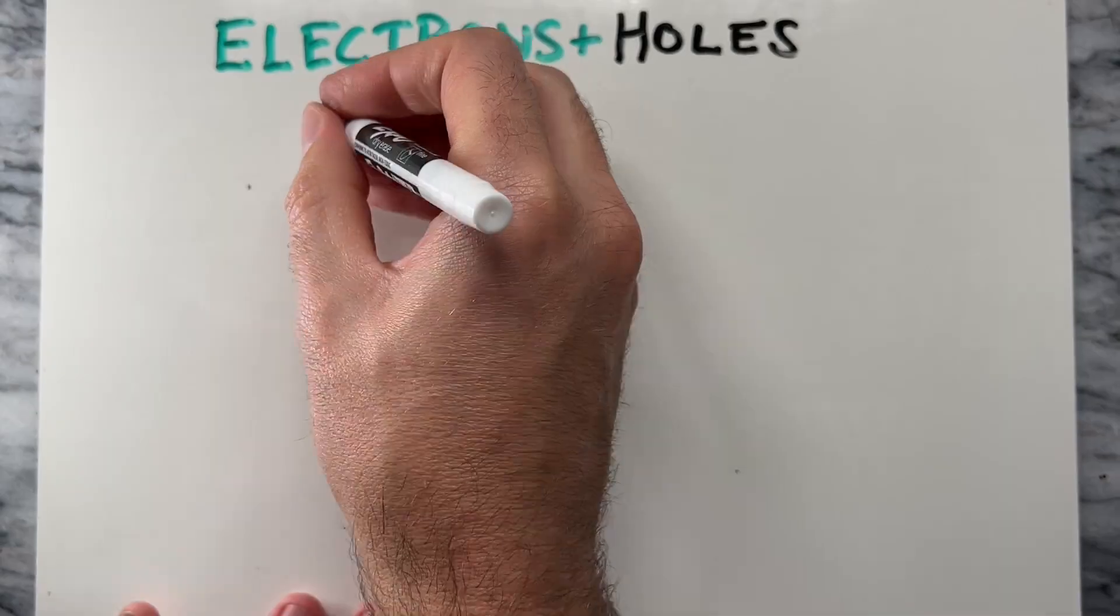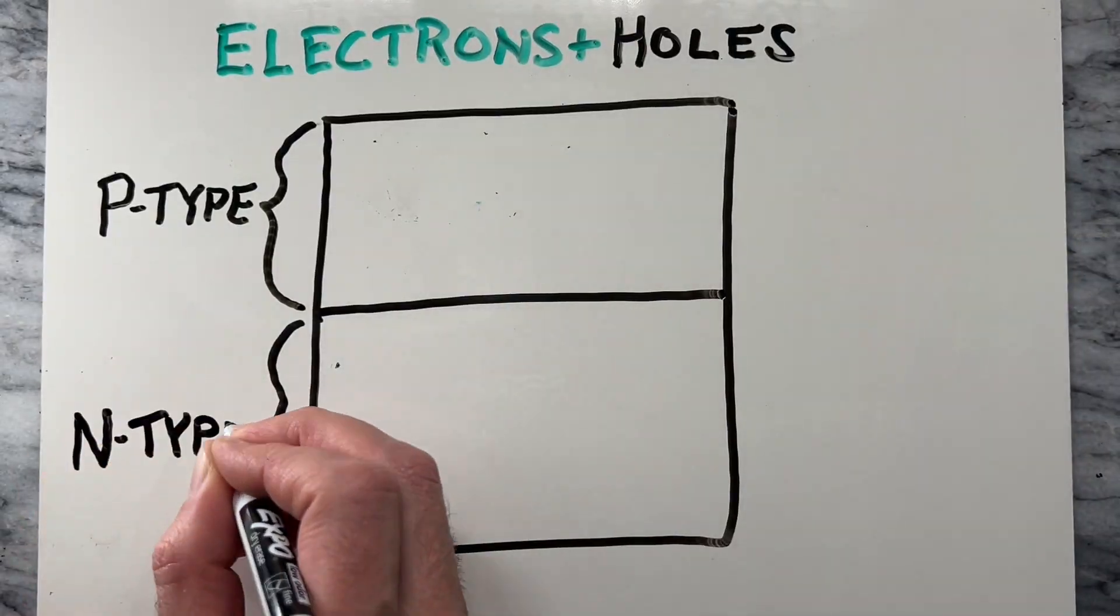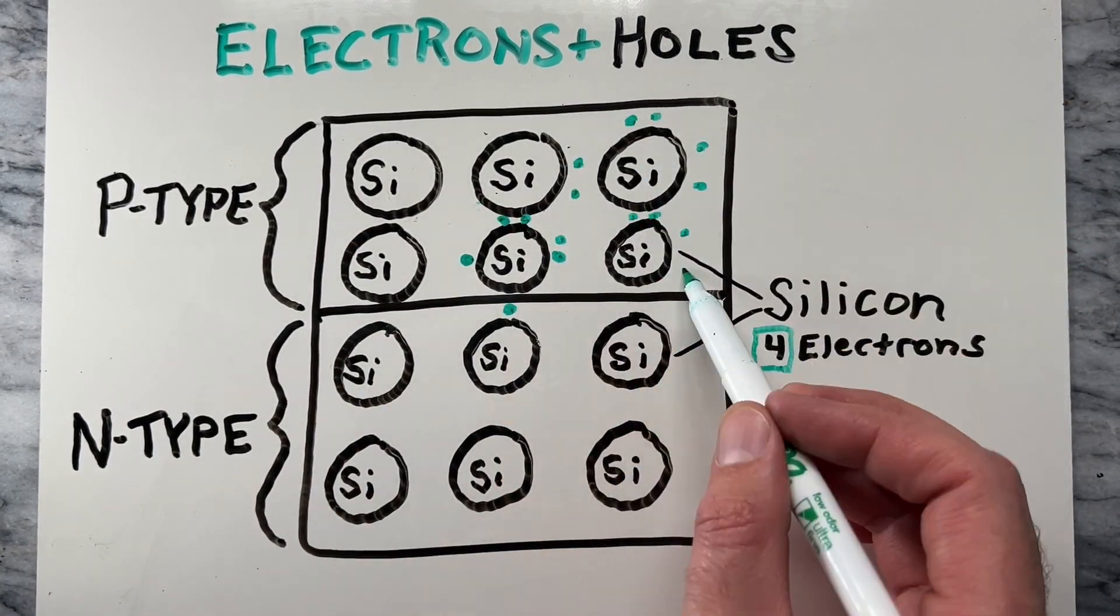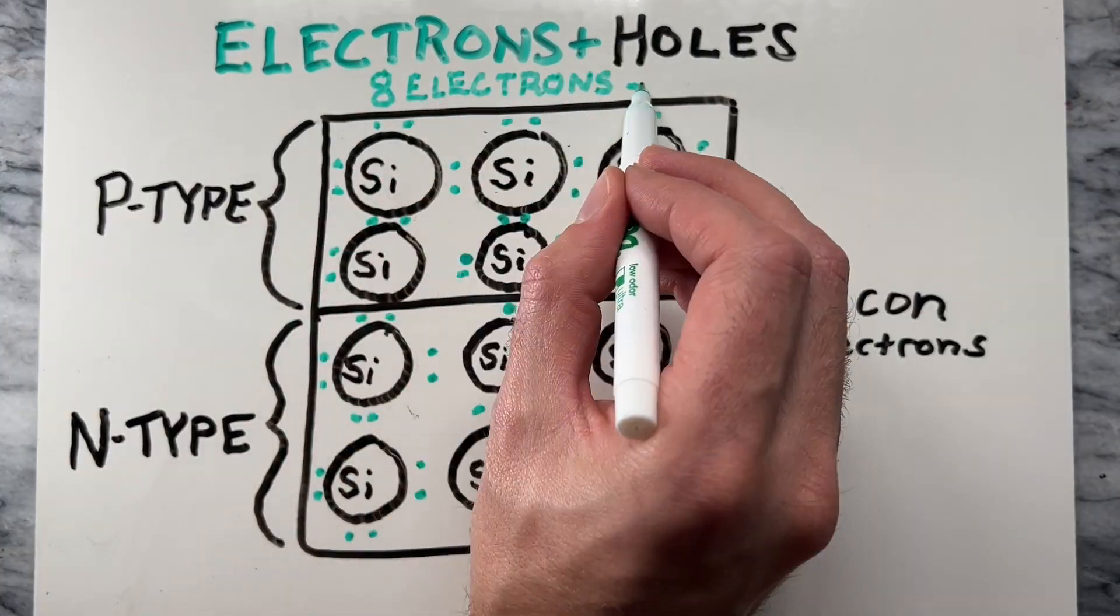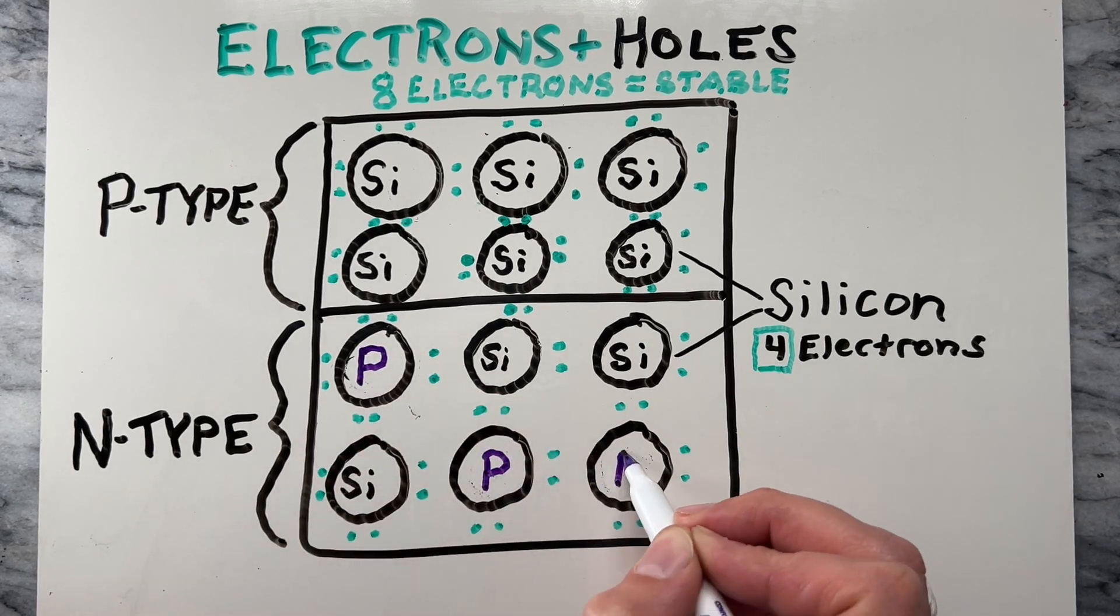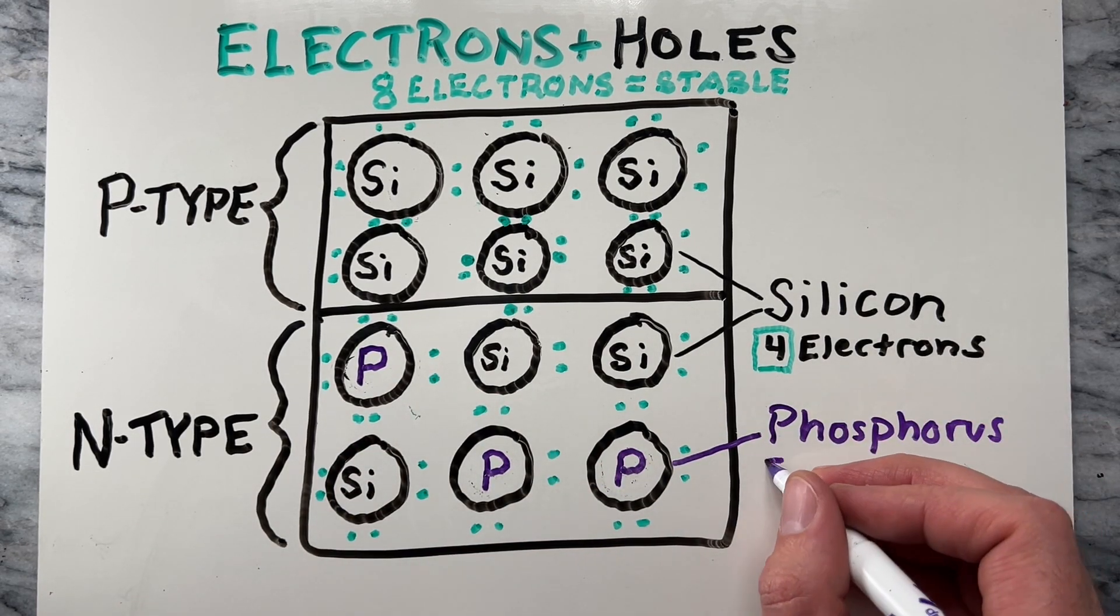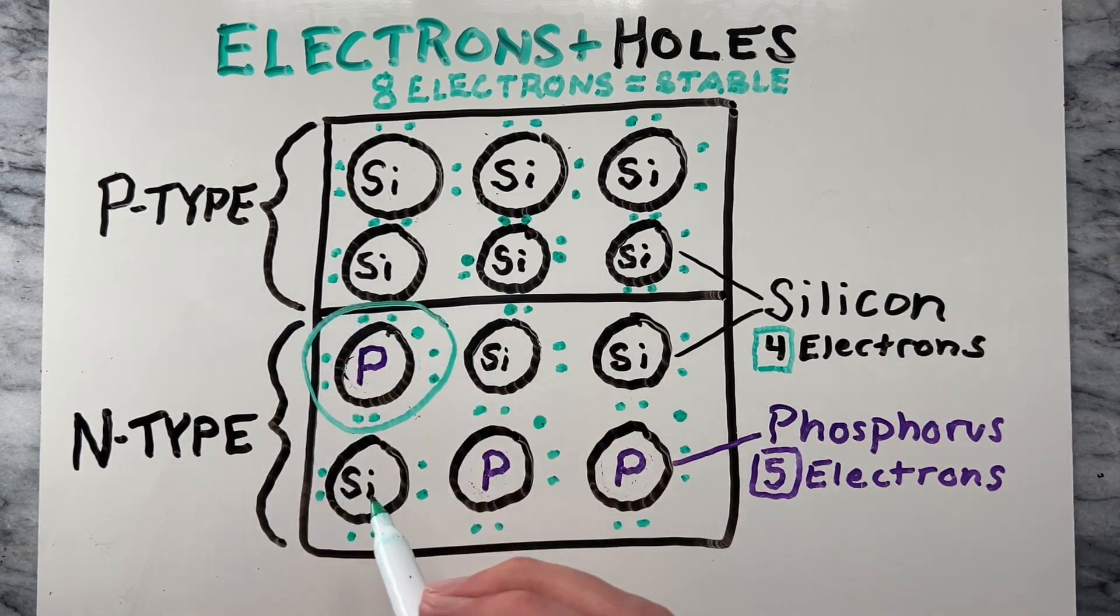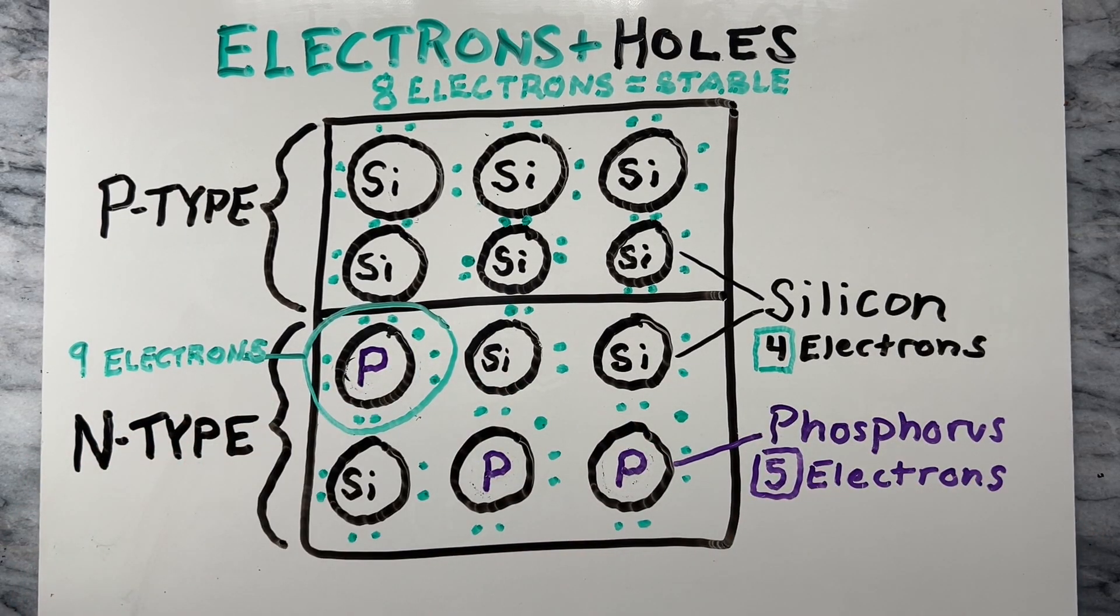So where do the electrons and holes come from? Silicon on its own has 4 electrons, and one shared with other silicon atoms has 8 electrons and is considered stable. Then impurities like phosphorus, that has 5 electrons, are added to the N-type layer, and are shared with the silicon atoms, making 9 electrons, which allows 1 electron to move freely.